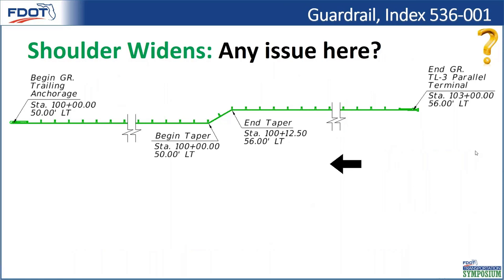Now we're looking at a shoulder widening scenario. Rather than show actual project plan sets, I went ahead and redrew it so we can focus on the particular issue without clutter. In this case, traffic is coming from right to left. The arrows indicate direction of traffic, which is good. We have an approach terminal on the approach side, called out properly. The trailing anchorage is downstream. They have a taper to accommodate the shoulder widening.